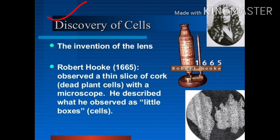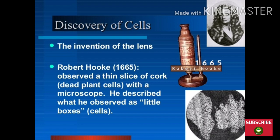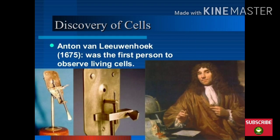So let's get started. Discovery of the cell: the invention of the lens. Robert Hooke, in 1665, observed a slice of cork — a dead plant cell — for the first time under the microscope. He discovered and observed that the cells appeared in the form of little boxes.